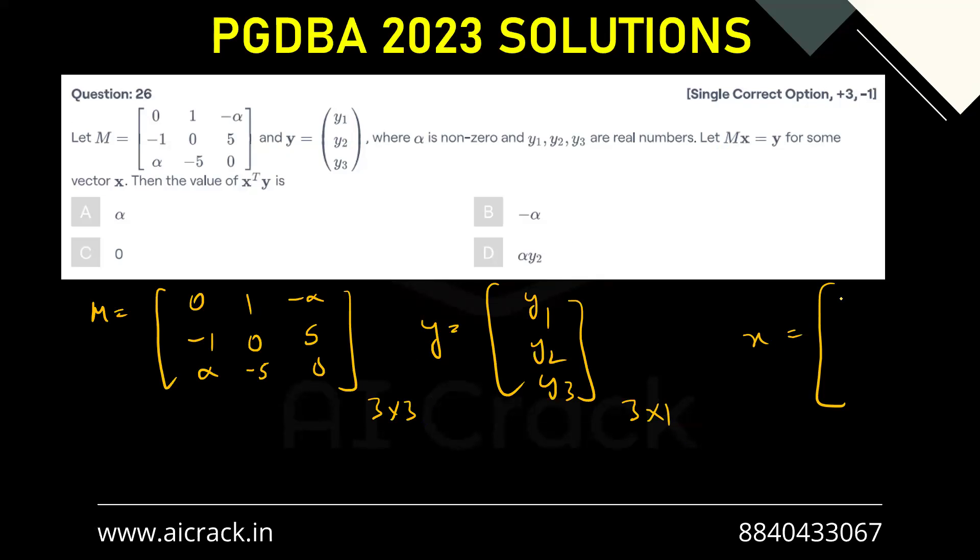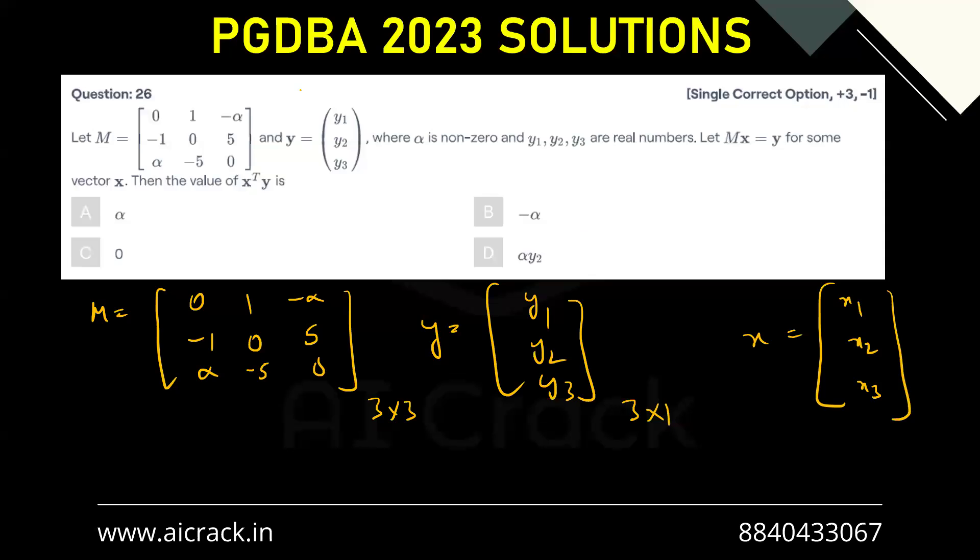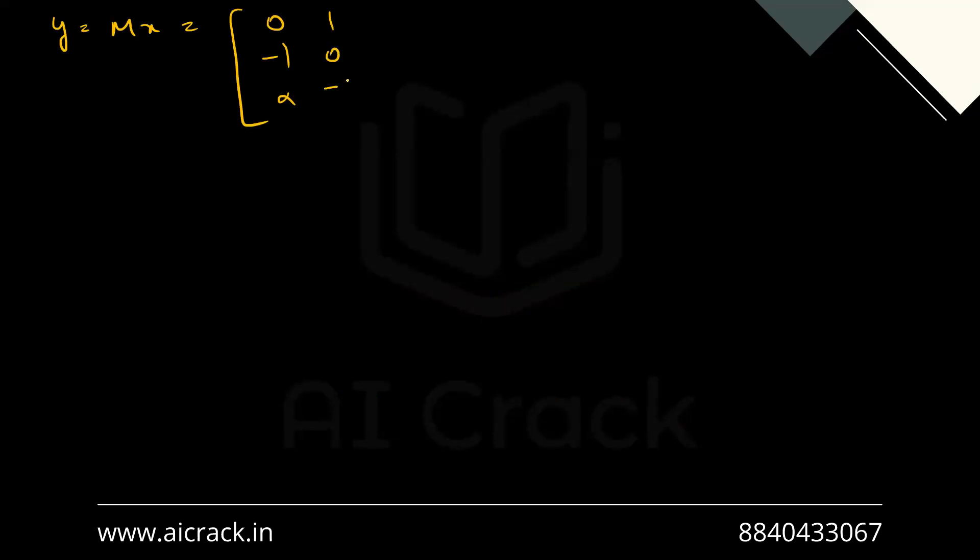So let X equal [x1; x2; x3]. So now we have to find the value of MX, that is Y. Okay, so let's multiply: Y equals MX equals [0, -1, alpha; 1, 0, -5; -alpha, 5, 0] multiplied by [x1; x2; x3].